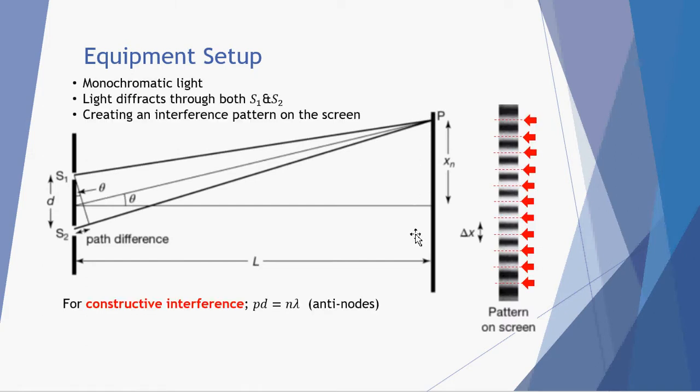This experiment uses monochromatic light meaning it has wavelengths that are all the same. Laser is perfect for this so each wavelength coming in is exactly the same as the previous one. Light diffracts through both slit 1 and slit 2, which is again a wave property diffraction, and creates an interference pattern as we can see on our screen here.